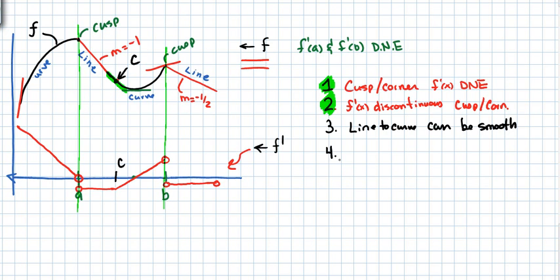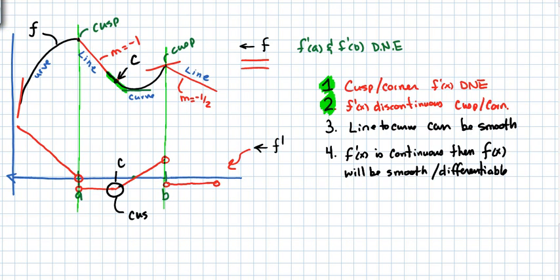Number four: the corollary of two is also true. If f prime of x is continuous, then f of x will be smooth or differentiable. So if we look over here, the derivative has a cusp. We would call this a corner or a cusp, it's really a corner because things are straight. And yet the original function was smooth. So if f prime of x is continuous it doesn't matter. Okay, to have a cusp just has to be continuous and the original function will be differentiable.